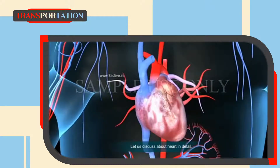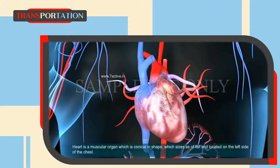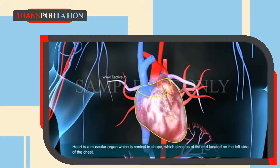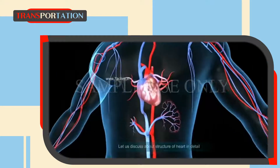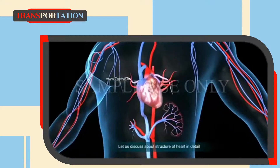The heart is a muscular organ which is conical in shape. Its size is approximately that of a fist, and it is located on the left side of the chest. Let us discuss the structure of the heart in detail.